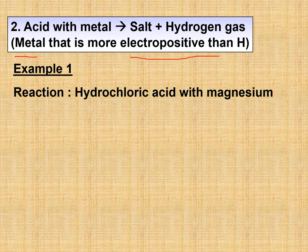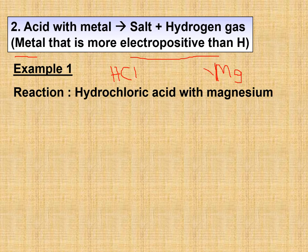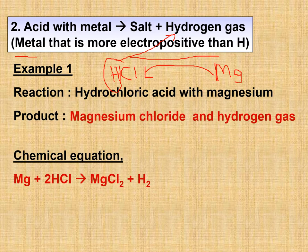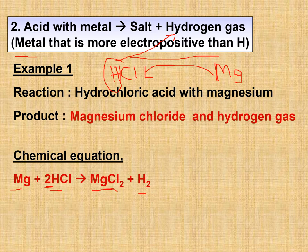Example 1: hydrochloric acid with magnesium. HCl is the formula for hydrochloric acid, and magnesium is Mg. Magnesium will combine with chlorine to form magnesium chloride, and hydrogen becomes hydrogen gas. The equation is: 2HCl + Mg → MgCl₂ + H₂. We put 2 in front of HCl because MgCl₂ requires Mg²⁺ and 2 Cl⁻.